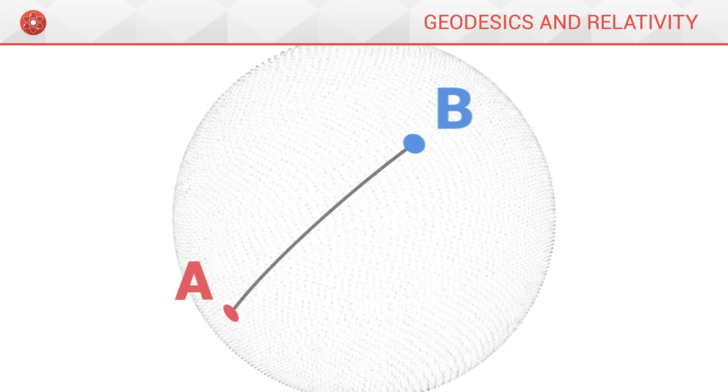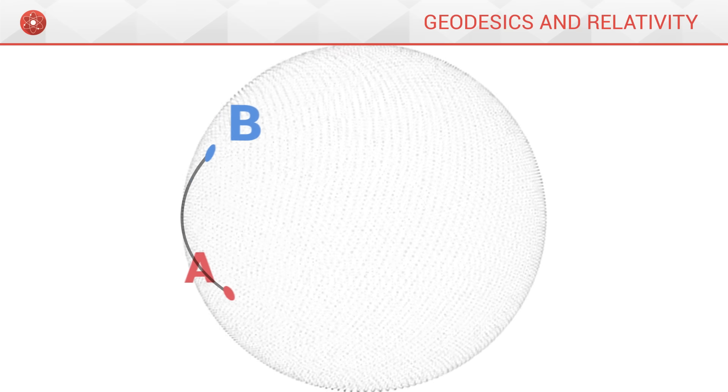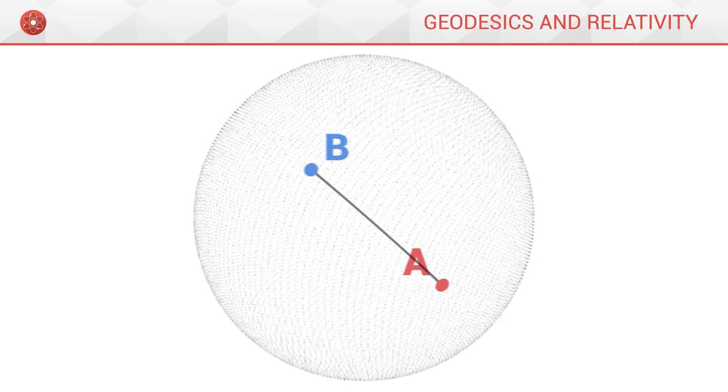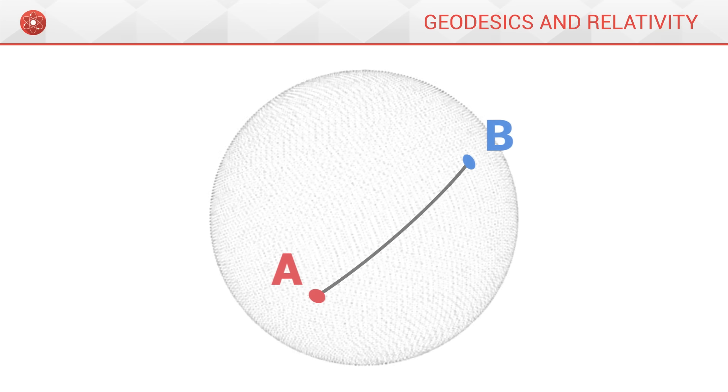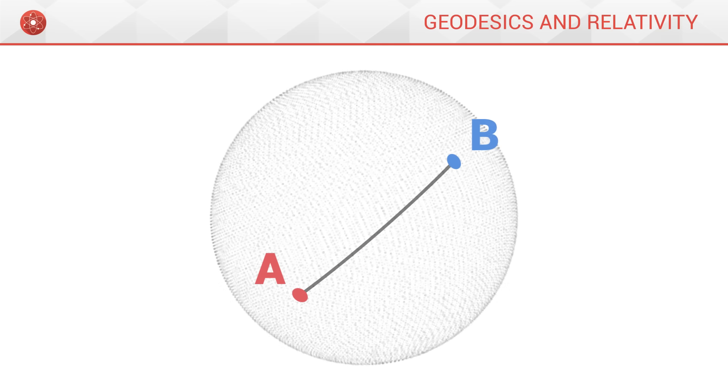When we are interested in the intrinsic geometry of a surface, we don't focus on the distance measured by the ruler, but on the distance an ant would travel. We measure this with a metric.